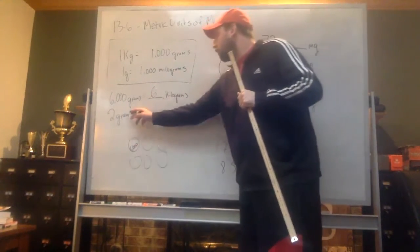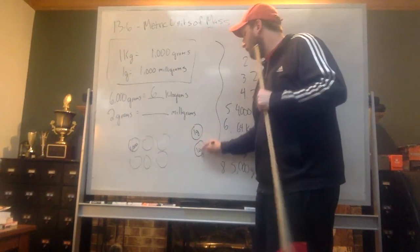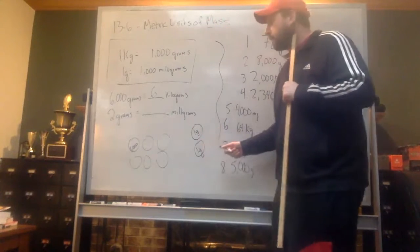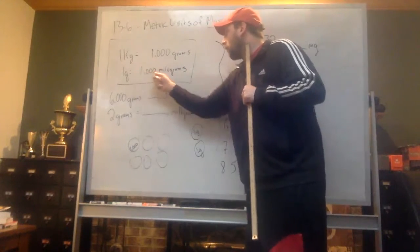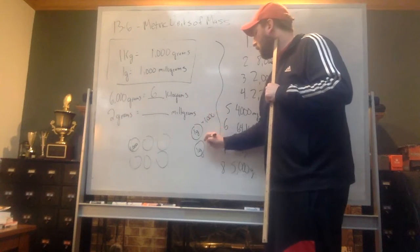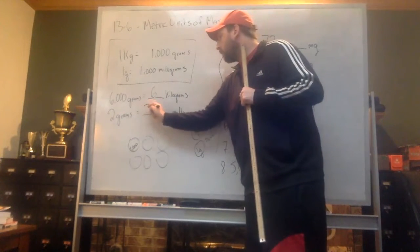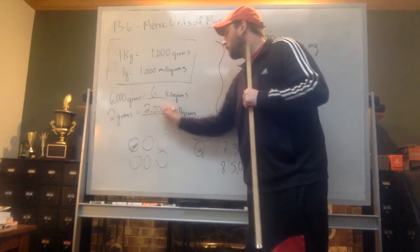Now, if we have two grams, we call this one gram and now this one, one gram. If we have two grams this time, and each gram is one thousand milligrams. Well, one gram equals one thousand, and another gram equals another thousand milligrams. So this would be two thousand milligrams.